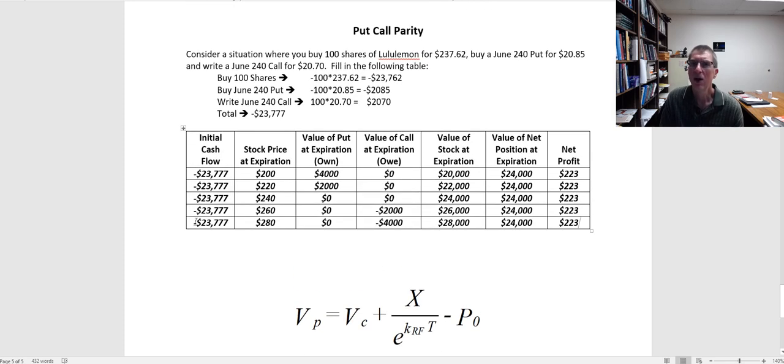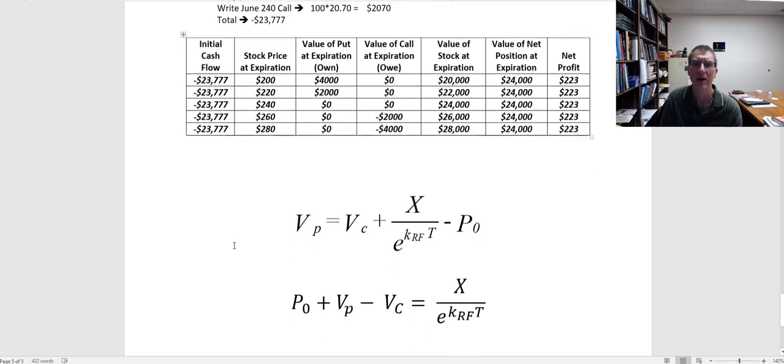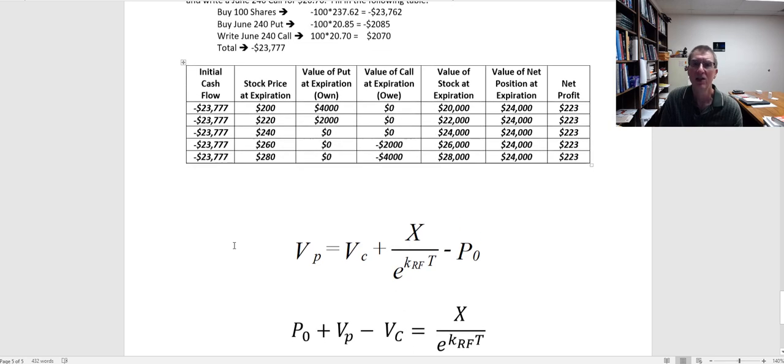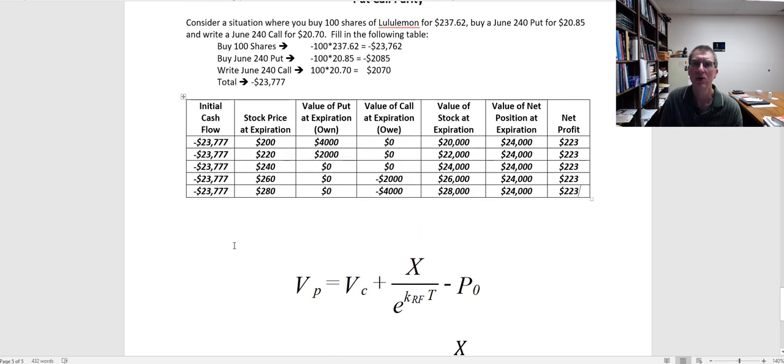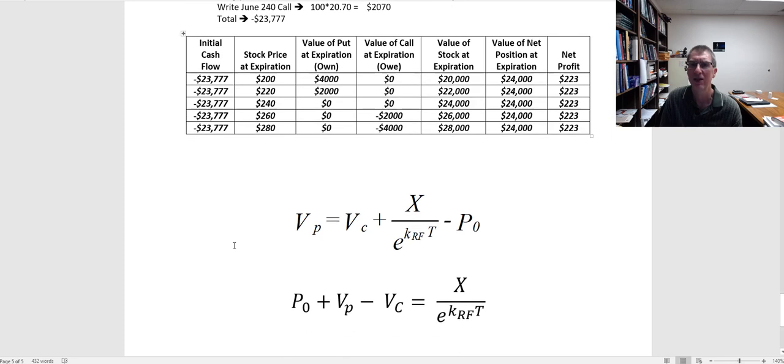This is why call and put prices are locked together. It doesn't really matter whether we think the stock price is going to go up or go down. The value of the call and the value of the put isn't based on how likely we think the stock price is to go up or how likely the stock price is to go down. Instead, it's based on factors of the stock such as standard deviation, time, those factors from the Black-Scholes option pricing model.